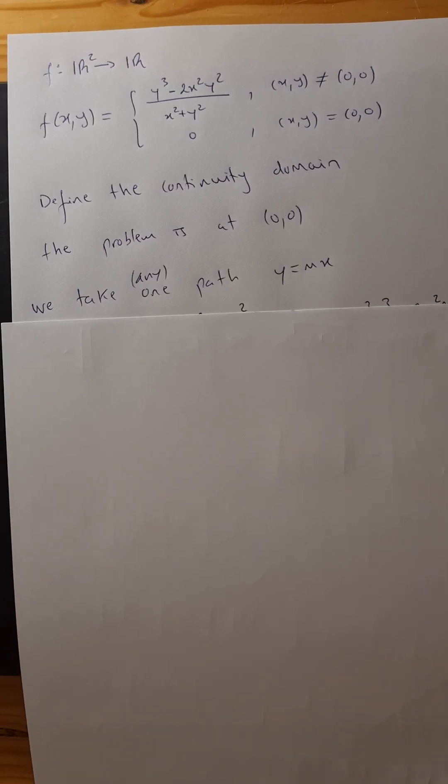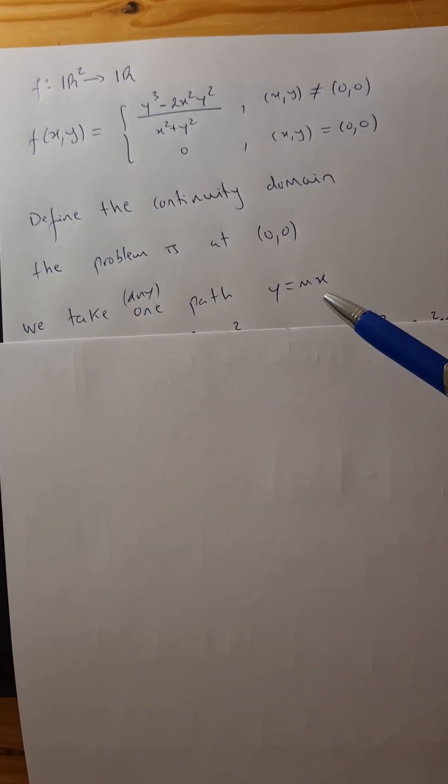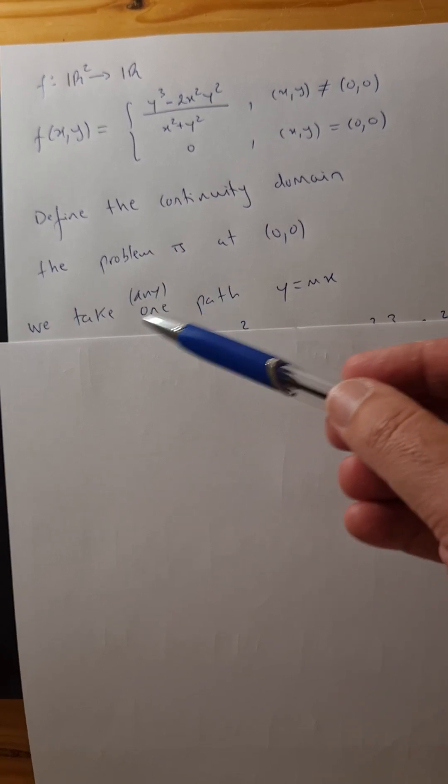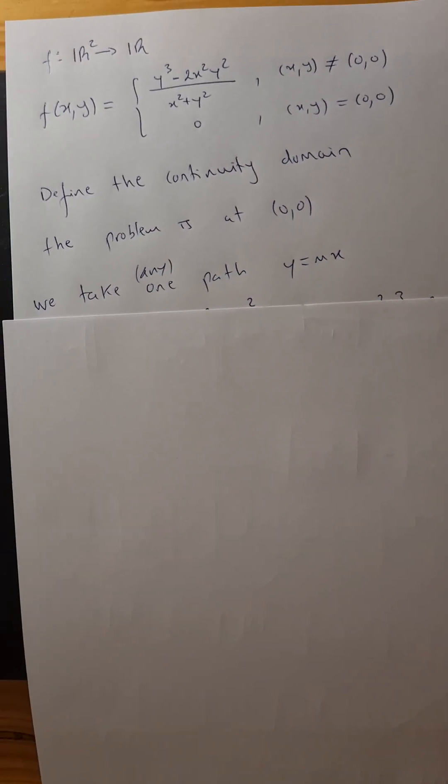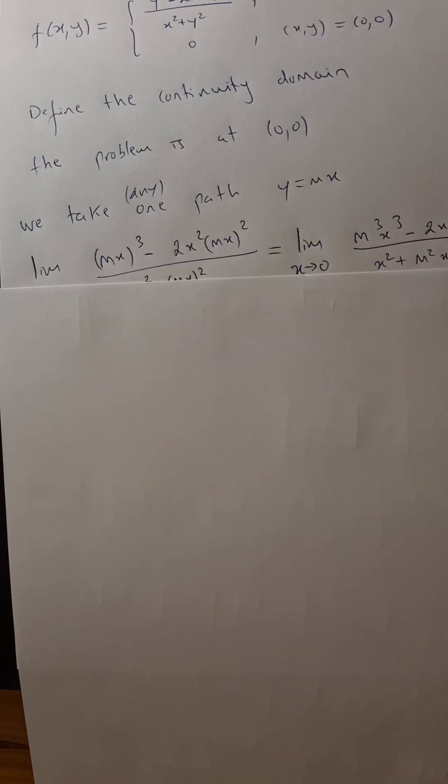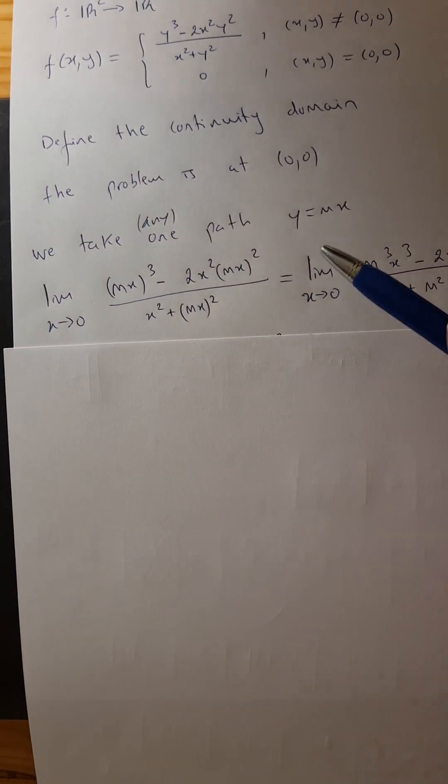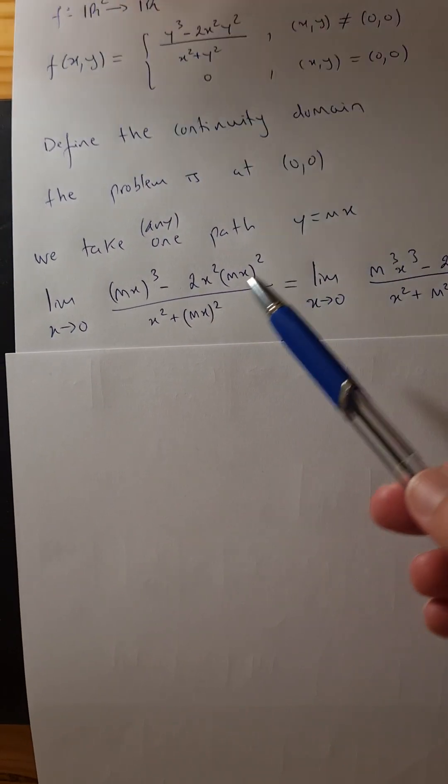So we take one path, let's say y equals mx. But we could choose another path. So y equals mx. My cat wants to participate.